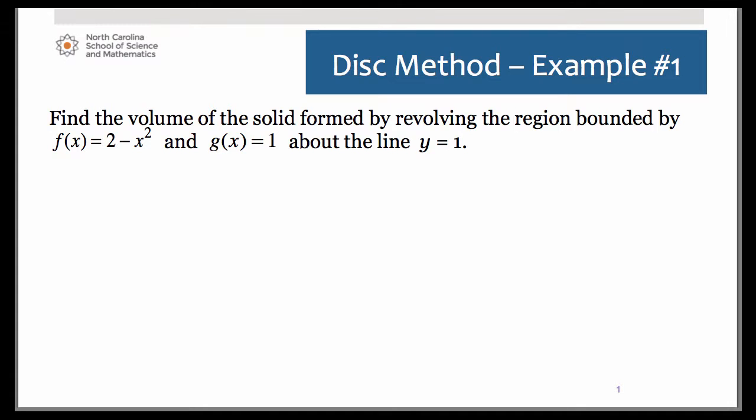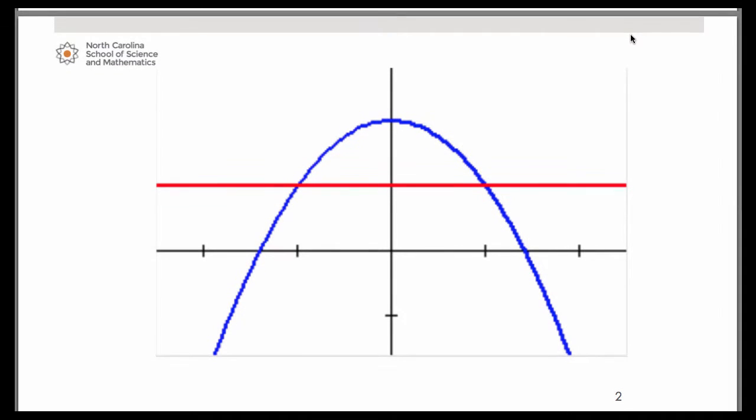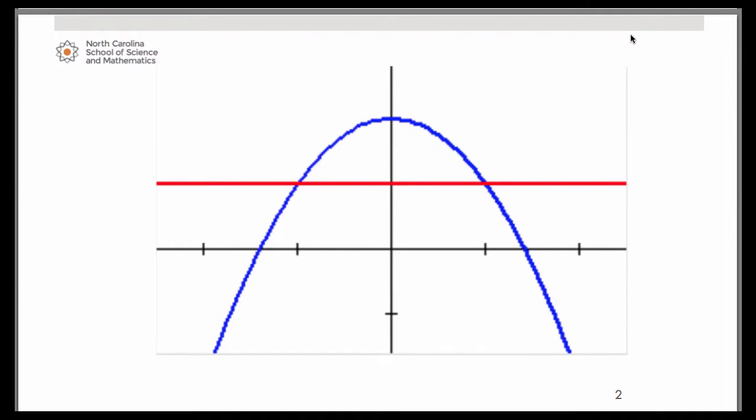If you go ahead and graph those on your calculator, I've done the same here and you should obtain a graph that looks like this. I did alter my window a little bit so you can do the same if you wish. You can see in blue the upside-down parabola that is the function f of x equals 2 minus x squared, and the red line is the line y equals 1.